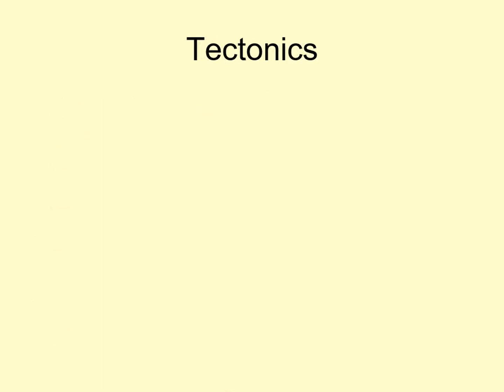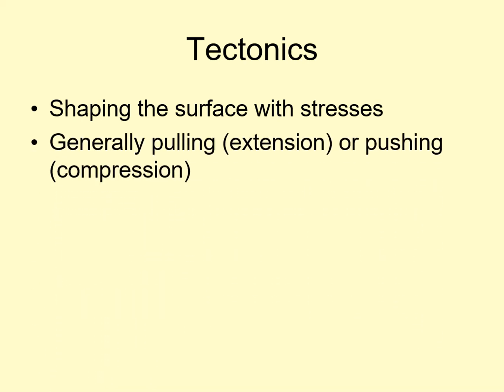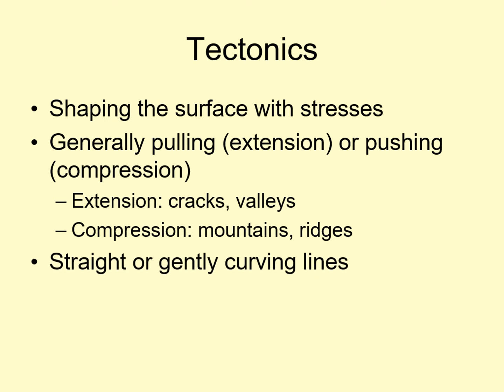The next major geologic process is tectonics. Tectonics means shaping the surface of a world with stresses — in other words, pushing or pulling on the surface. When the surface is being pulled apart, we call this extensional tectonics, which typically produces cracks or valleys on a planet's surface. On the other hand, when the surface is being pushed together, we call that compressional tectonics, which usually leads to forming mountain ranges and ridges. Either way, the surface features produced by tectonics tend to be linear, straight, or gently curving lines on the large scale.